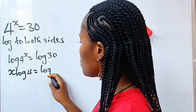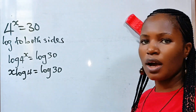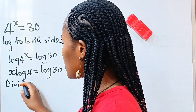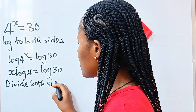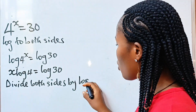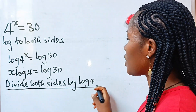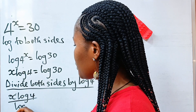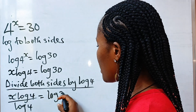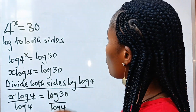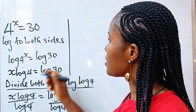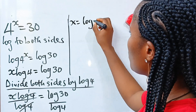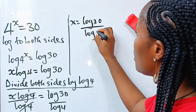So we write this as x multiplied by log 4 is equal to log 30. Now let's divide both sides by log 4. We get x·log4 divided by log4 equals log30 divided by log4. Log4 divided by itself gives 1, so x is equal to log 30 divided by log 4.